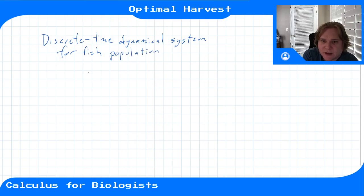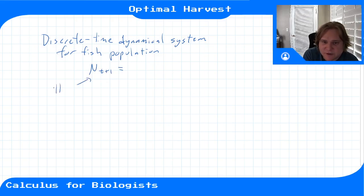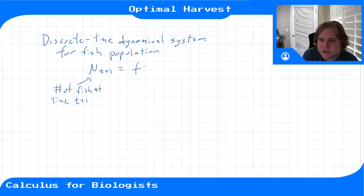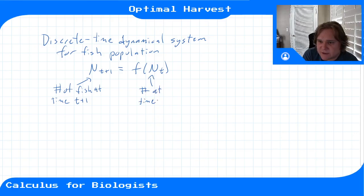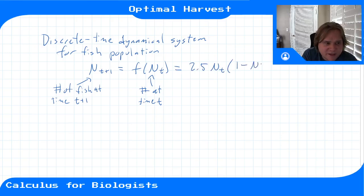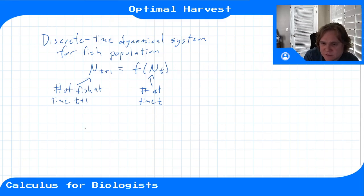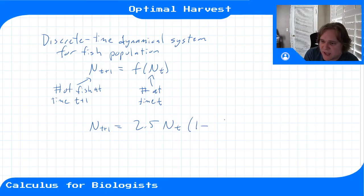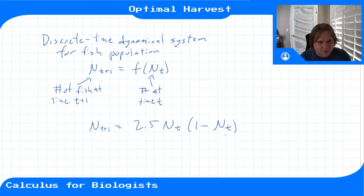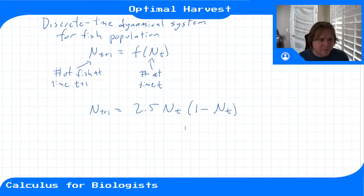The fish population grows according to n(t+1), the number of fish in generation t+1, which is a function of the number of fish at time t. That function is given by 2.5 · n_t · (1 − n_t). So n(t+1) = 2.5 · n_t · (1 − n_t), which means it grows according to the logistic equation.